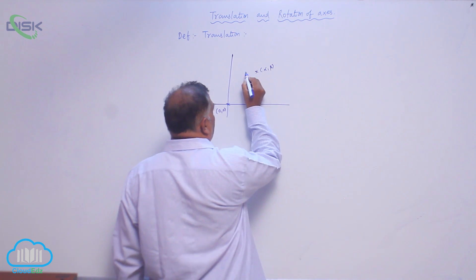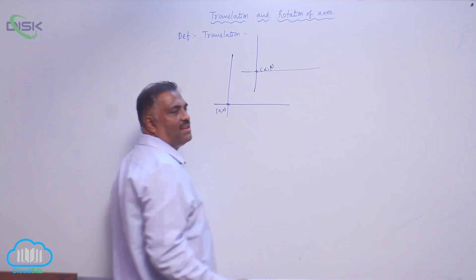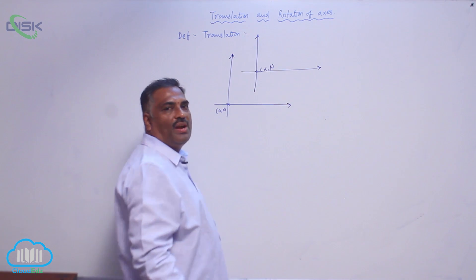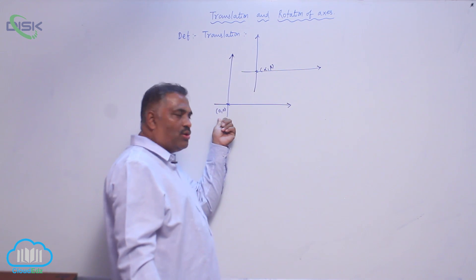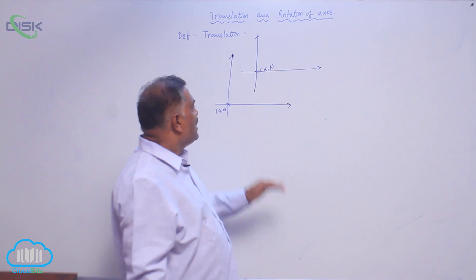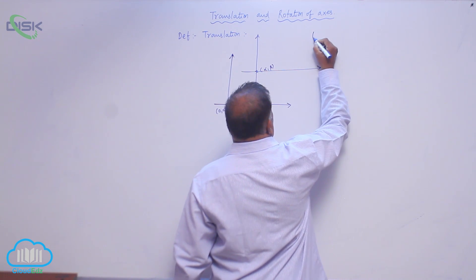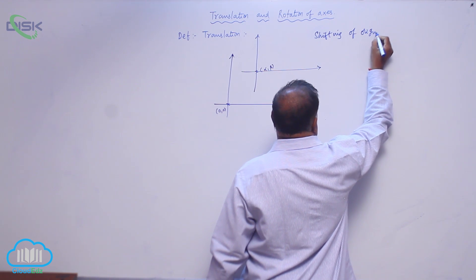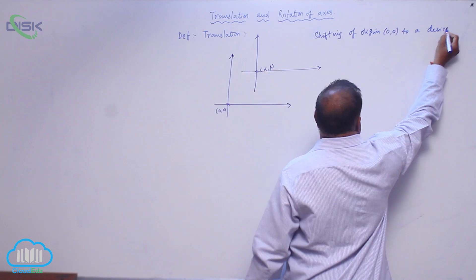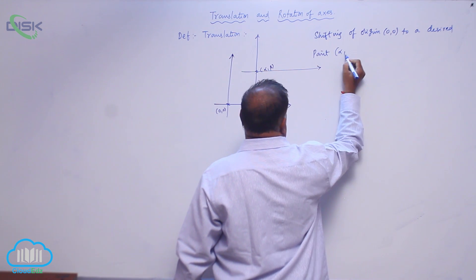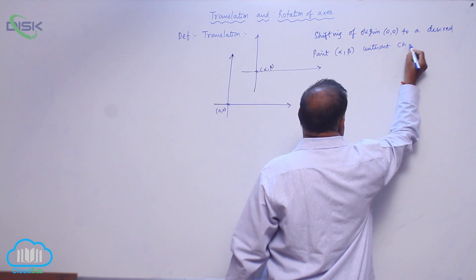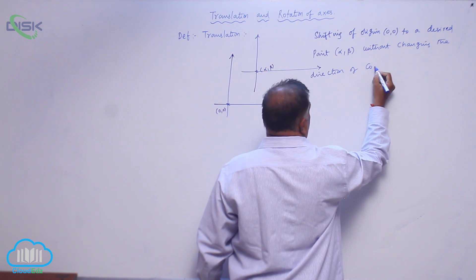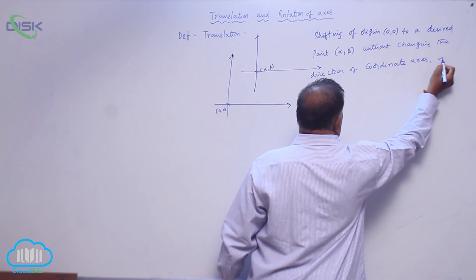That means you have to draw a line parallel to the x-axis and a line parallel to the y-axis. So this is the old x-axis, this is the new x-axis, this is the old y-axis, this is the new y-axis. Shifting of origin from (0,0) to a desired point (α, β) without changing the direction of the coordinate axis is called translation.